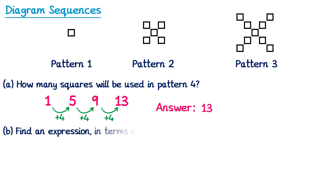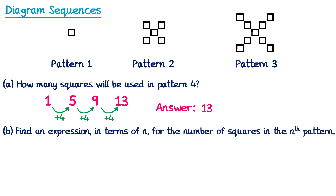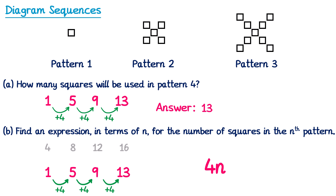For part b we need to find an expression in terms of n for the number of squares in the nth pattern — we need to find the nth term of that sequence. We know we add 4 each time, so the answer must involve 4n. The 4 times table is 4, 8, 12, 16. We then work out how to get from the 4 times table to our sequence: to get from 4 to 1 we subtract 3. This works for all of the other terms, so the nth term is 4n subtract 3.